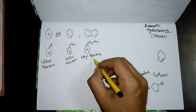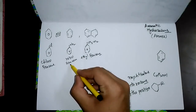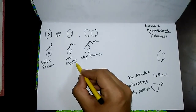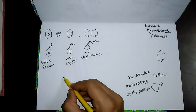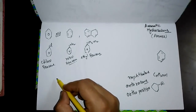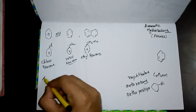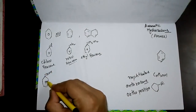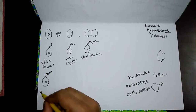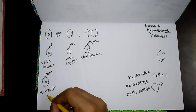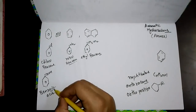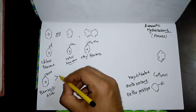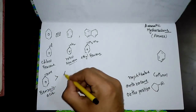Some common substituents change the root name of the ring entirely. IUPAC accepts these as root names. Listed in decreasing priority: the highest priority is when a carboxylic acid group is attached to the benzene ring — we name this benzoic acid.